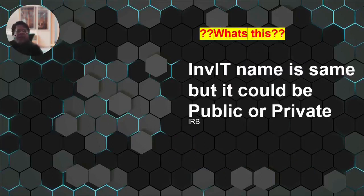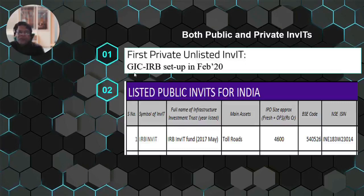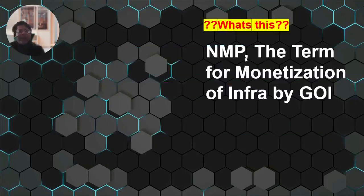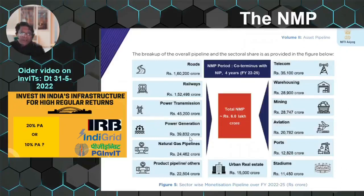Another nuance: an InvIT name can be the same but one version can be a public listed InvIT and another a private InvIT. The case of IRB illustrates this — there is the unlisted IRB GIC InvIT and the listed public IRB InvIT. On infrastructure monetization: NMP stands for National Monetization Pipeline, a large government of India vision where lakhs of crores of rupees worth of assets would be monetized. An older video covers this, and you can also refer to the NITI Aayog website for the full NMP paper.